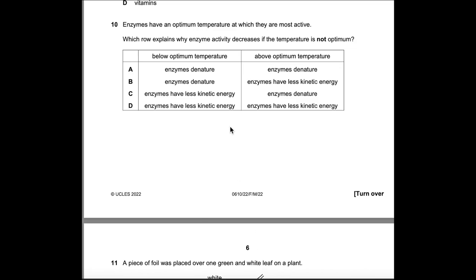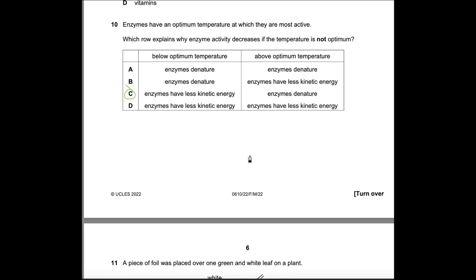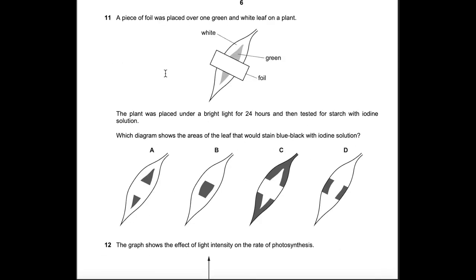Question 10: Enzymes have an optimum temperature at which they are most active. Which row explains why enzyme activity decreases if the temperature is not optimum? Enzymes do not denature below optimum temperature — denaturation occurs above it. So we cannot choose A or B. Below optimum, enzymes have less kinetic energy — that's correct. Above optimum the active site changes shape and the substrate can no longer fit. The answer is C.